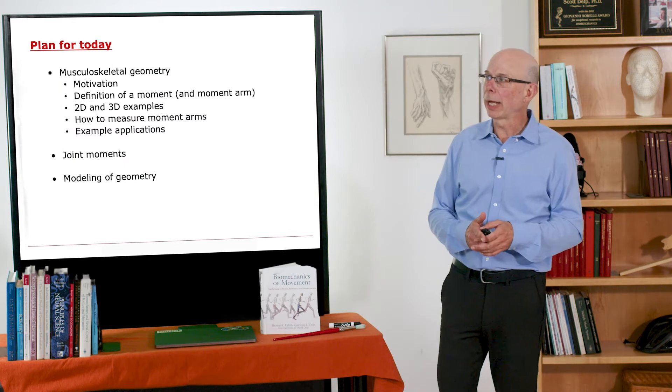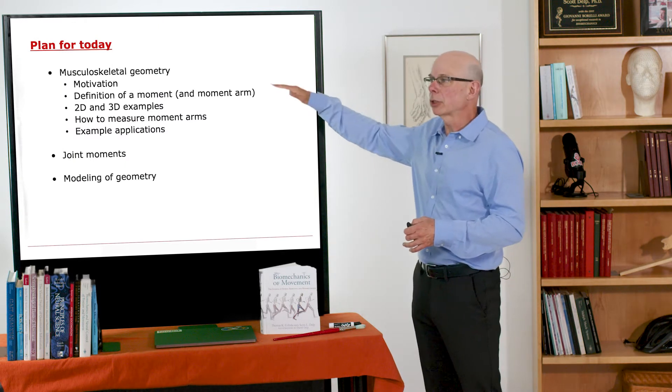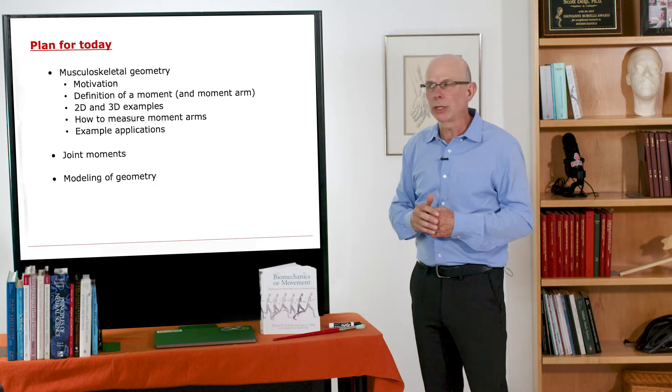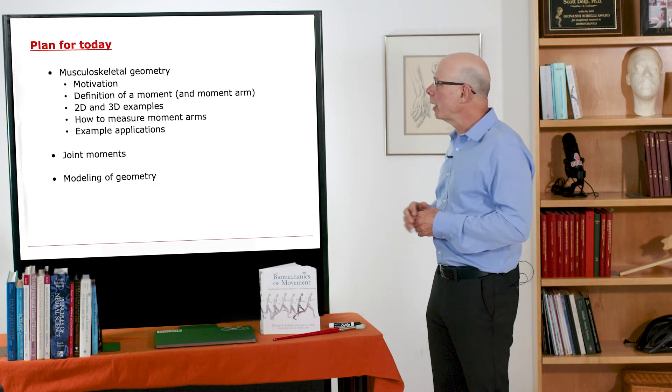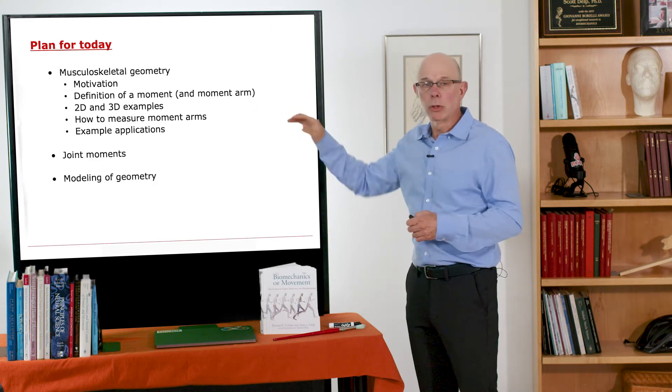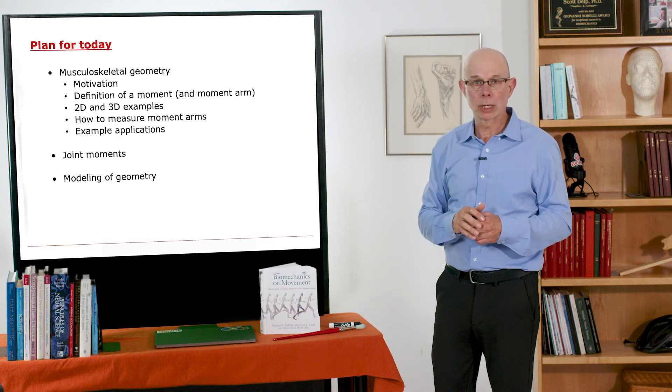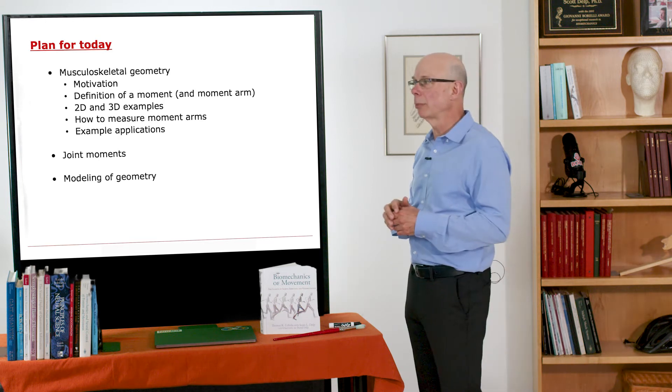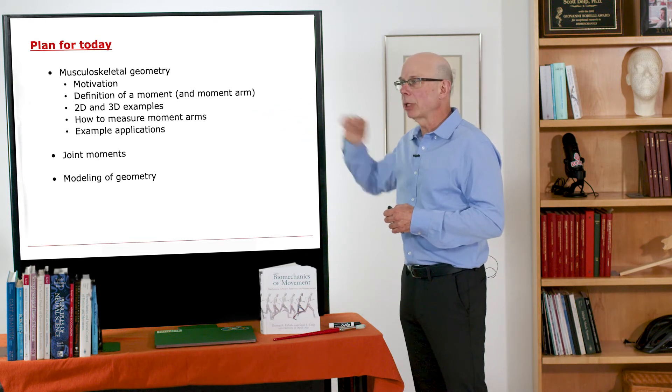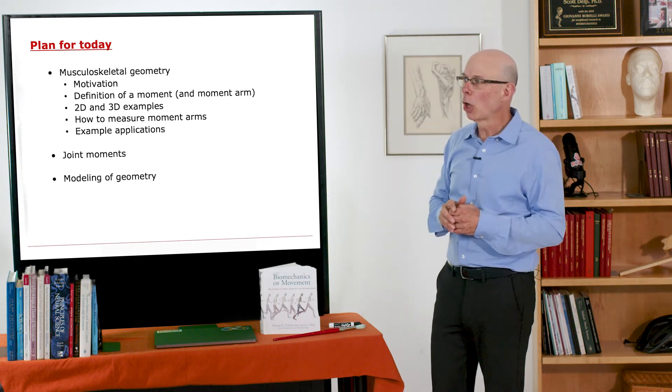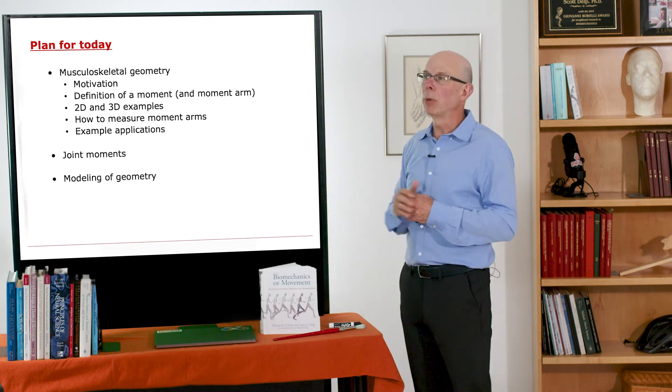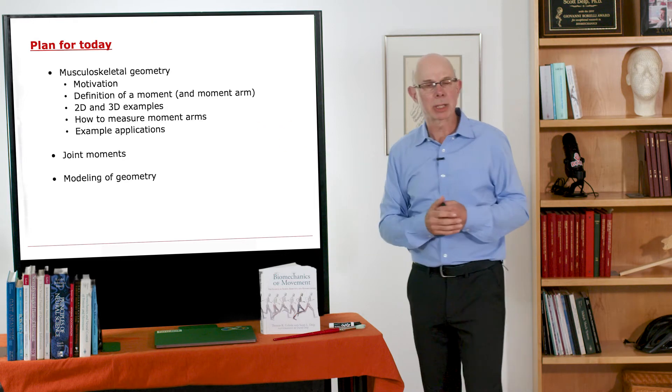The basic plan is this. We'll talk about musculoskeletal geometry, why we study geometry. We'll define a moment and a moment arm. Those are key parameters for characterizing musculoskeletal geometry. We'll do an example in two dimensions, an example in three dimensions.